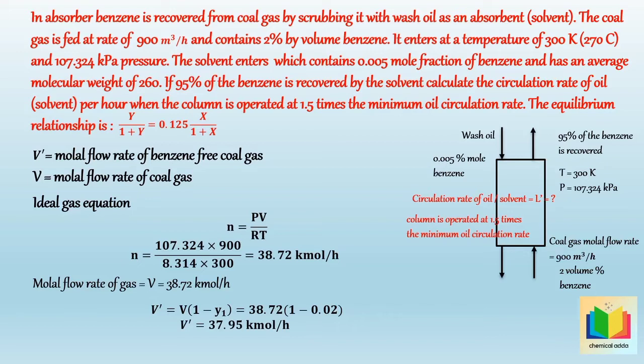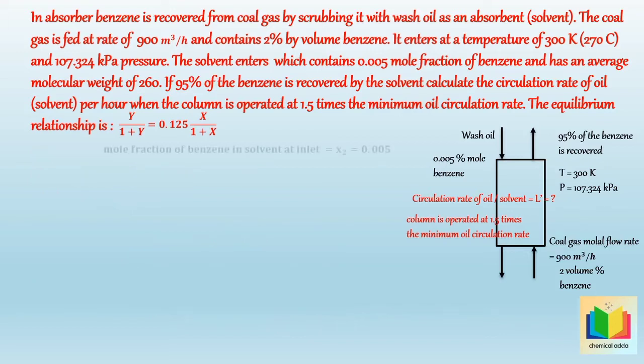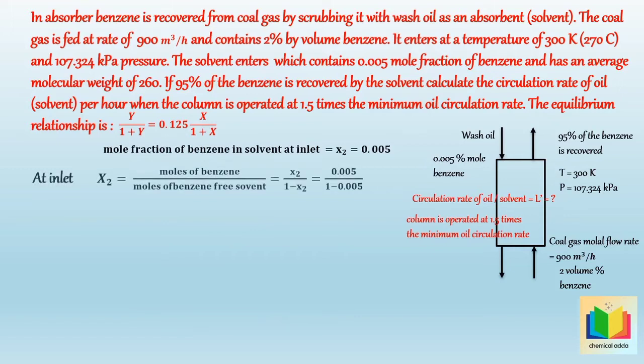Now let's calculate X2. As given, the mole fraction of benzene in the solvent at inlet, that is x2, is equal to 0.005. Hence at inlet, the mole ratio X2 is calculated as moles of benzene divided by moles of benzene-free solvent. After putting values and solving it we get X2 is equal to 0.005025.